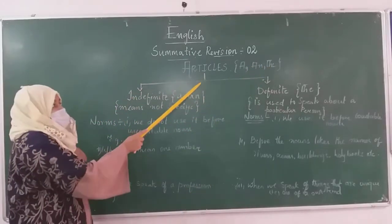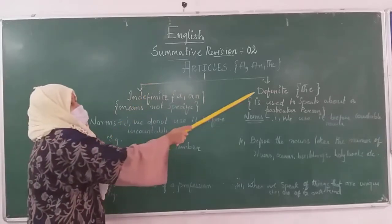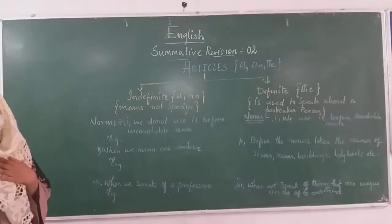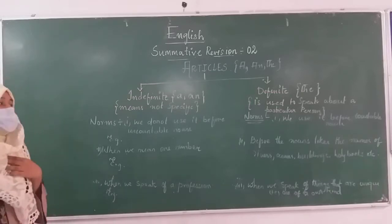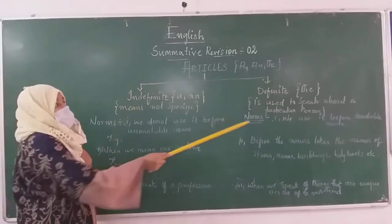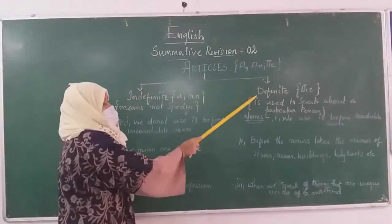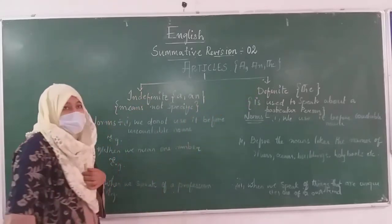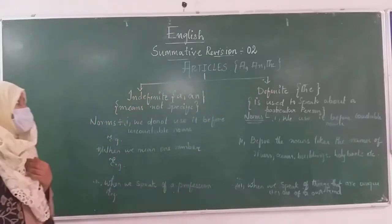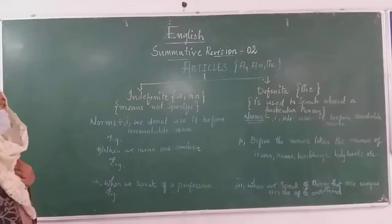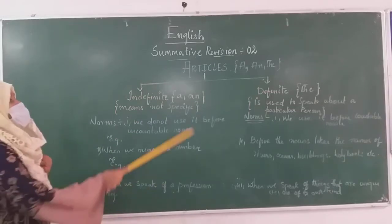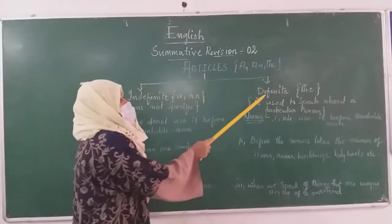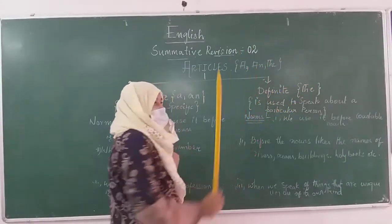These articles are divided into two types: indefinite and definite. Indefinite articles are A and AN, whereas the definite article is THE.